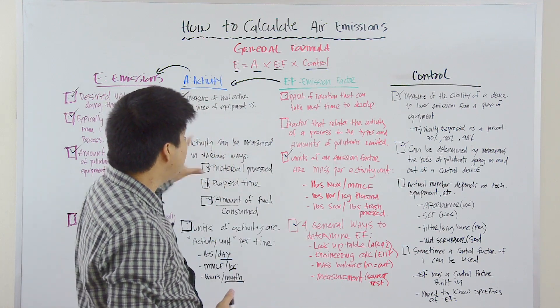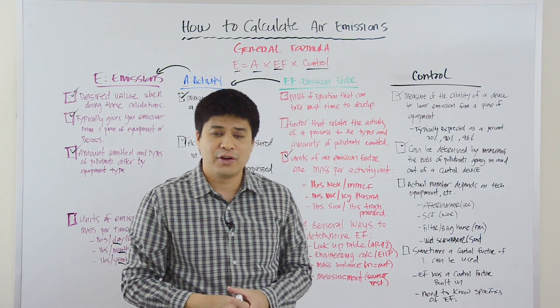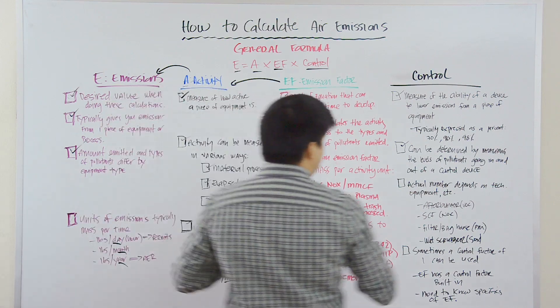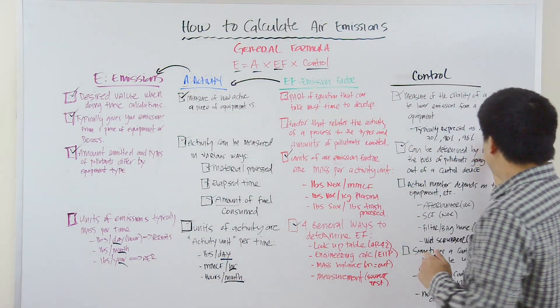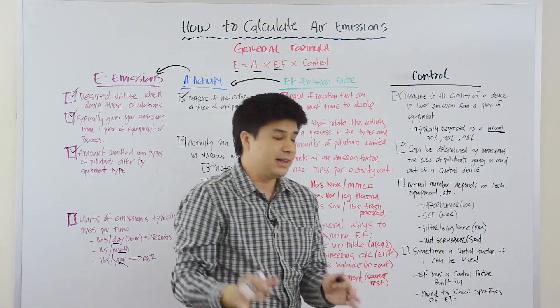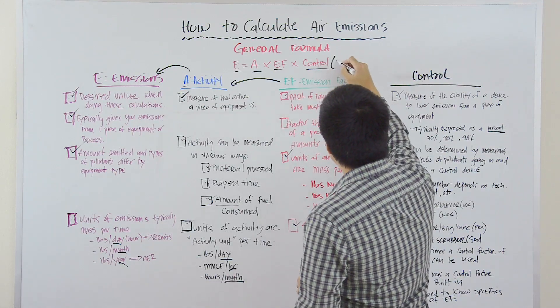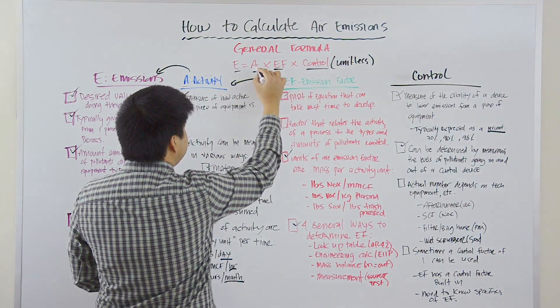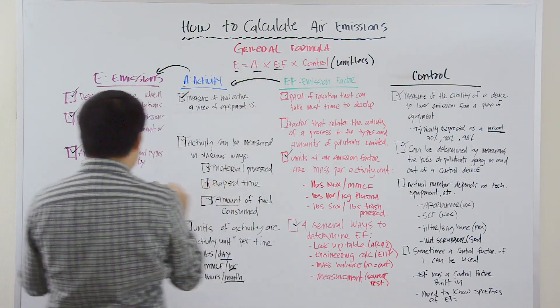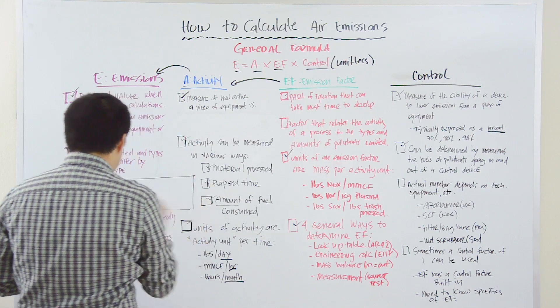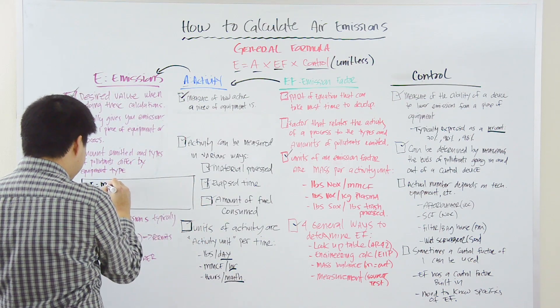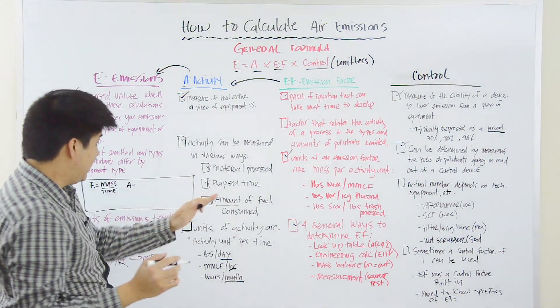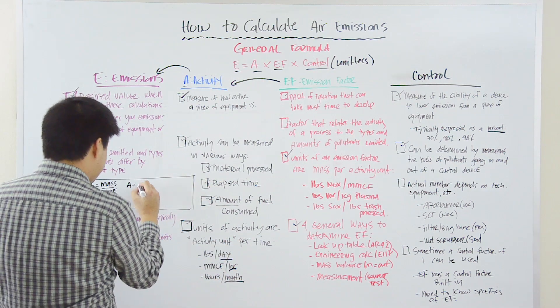And so, with that, we've sort of deconstructed the general formula for calculating air emissions. And the last thing I wanted to do is I wanted to show you how the units work. And so, typically, like we said here, the units are percent. And so, they're going to be unitless. E will be, like we said, mass per time. A will be activity unit per time.